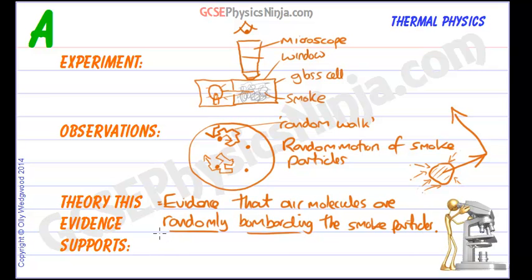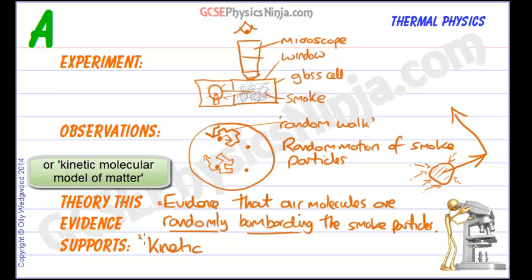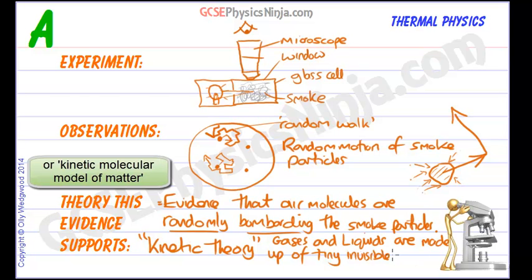This is called Brownian motion. And the kinetic theory is what's supported. The kinetic theory is that gases and liquids are made up of tiny invisible particles that move randomly and collide. So that's the theory. The theory is kinetic theory and this is evidence that air, and you can also do this experiment with liquid.